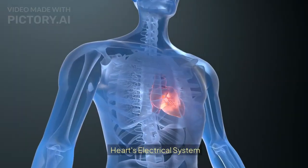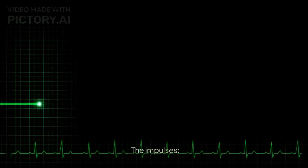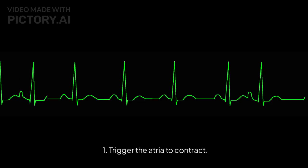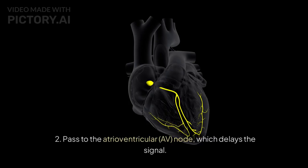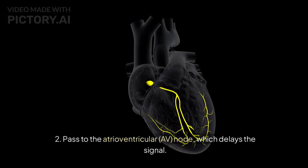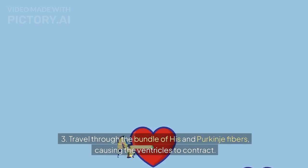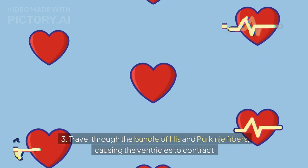Heart's electrical system: the heart beats due to electrical impulses generated by the sinoatrial (SA) node, often called the natural pacemaker. The impulses: 1. Trigger the atria to contract. 2. Pass to the atrioventricular (AV) node, which delays the signal. 3. Travel through the bundle of His and Purkinje fibers, causing the ventricles to contract.